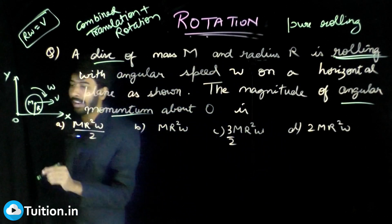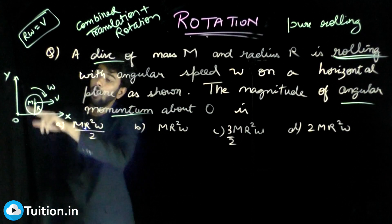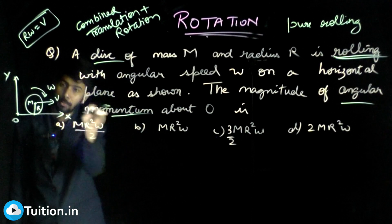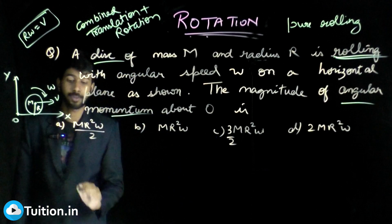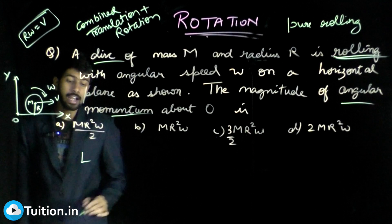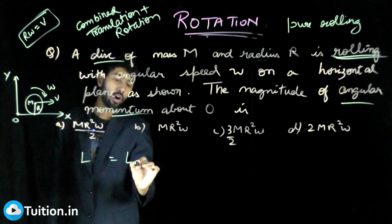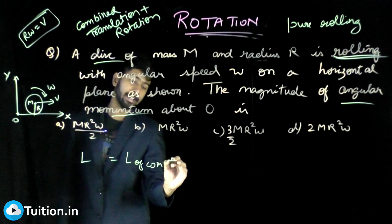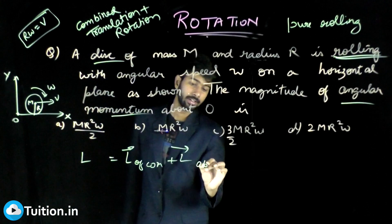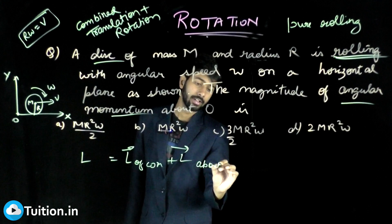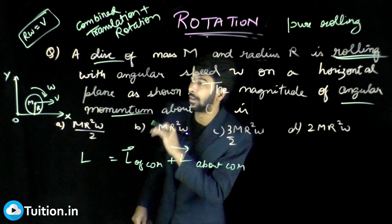How do I find the angular momentum of a body which is rotating and moving about some external point? For that we will use the expression: L equals L of center of mass plus L about center of mass. Let us look at how we can vectorially do it properly.